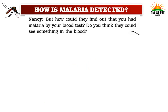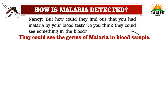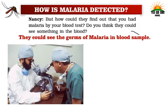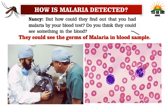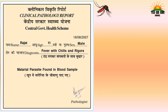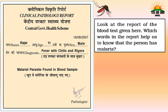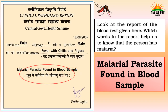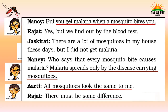Nancy asked: how could they find out you had malaria by a blood test? Yes, they could see the germs of malaria in the blood sample. On observing under a microscope, they could see the malaria germs. This is the pathological report of his blood test. The report reads: Name — Rajat, Age — 11 years, Sex — male, Diagnosis — fever with chills and rigors. It is clearly mentioned that malarial parasite has been found in the blood sample. Rajat was diagnosed with malaria.